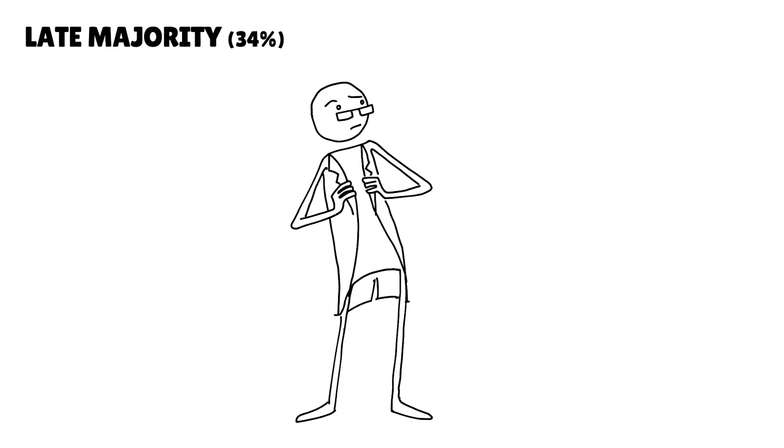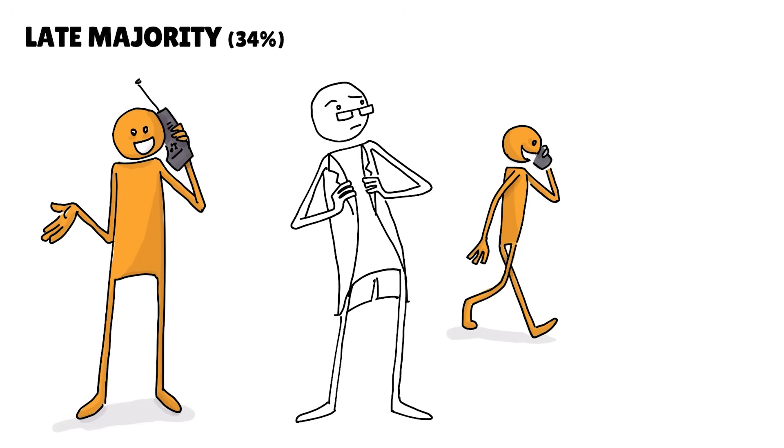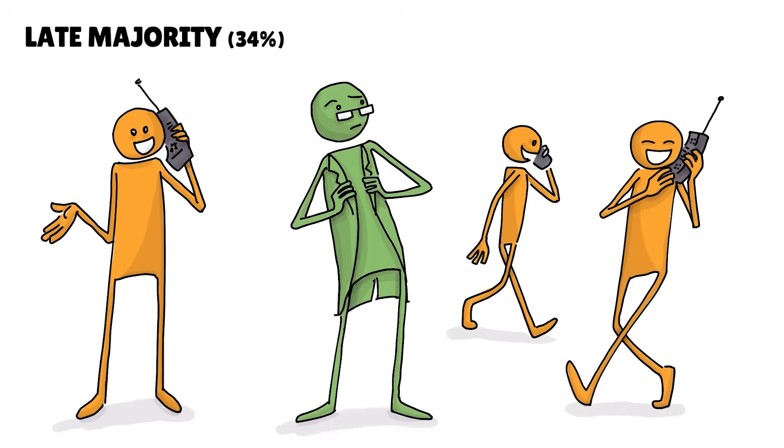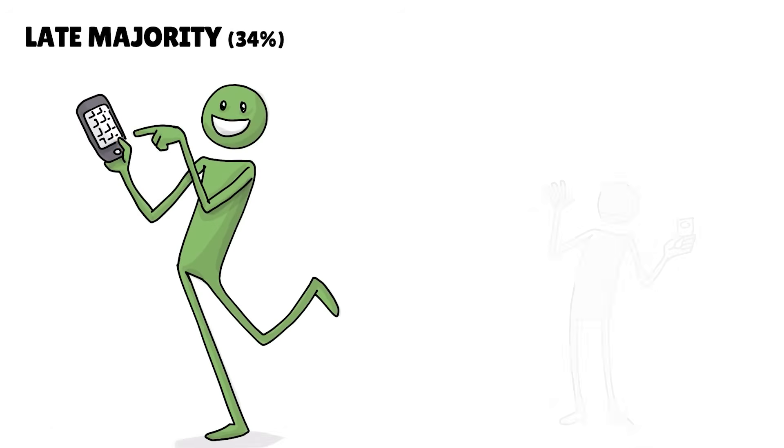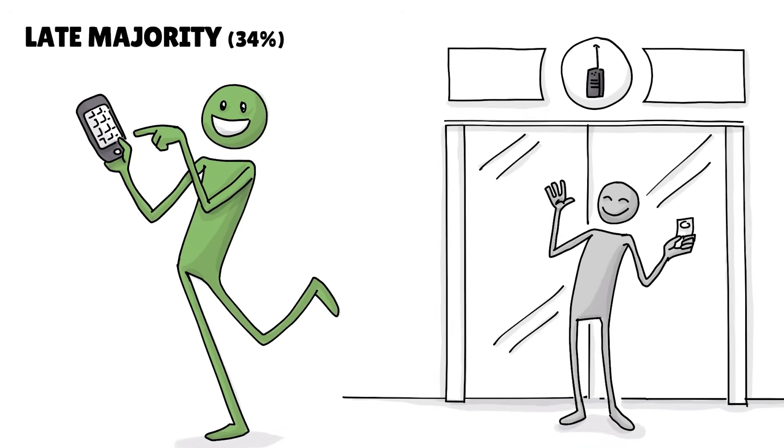People from the late majority are skeptical and cautious. Often more traditional, these folks wait until a majority has embraced something before they do. They finally got a $100 cell phone in 2008, long after everyone else.